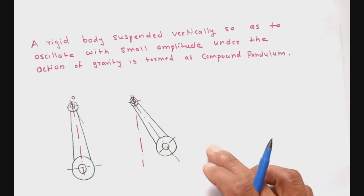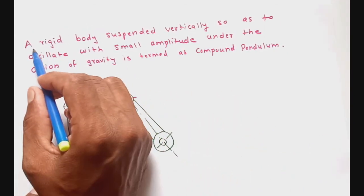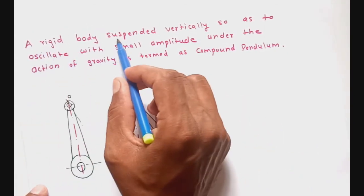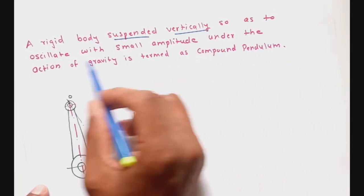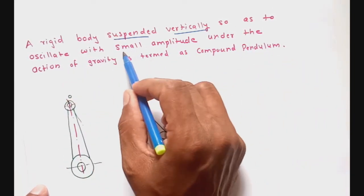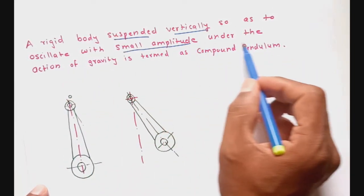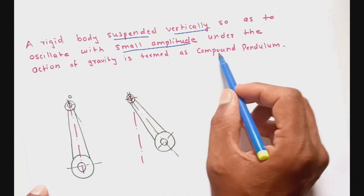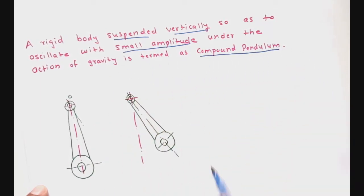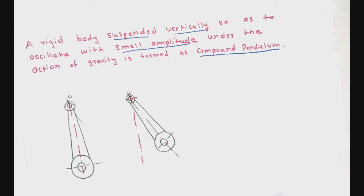Now let us define the compound pendulum. A rigid body suspended vertically so as to oscillate with small amplitude under the action of gravity is termed as compound pendulum. So when we suspend any rigid body vertically and allow it to oscillate with small amplitude under the action of gravity, we will term the system as the system of compound pendulum.